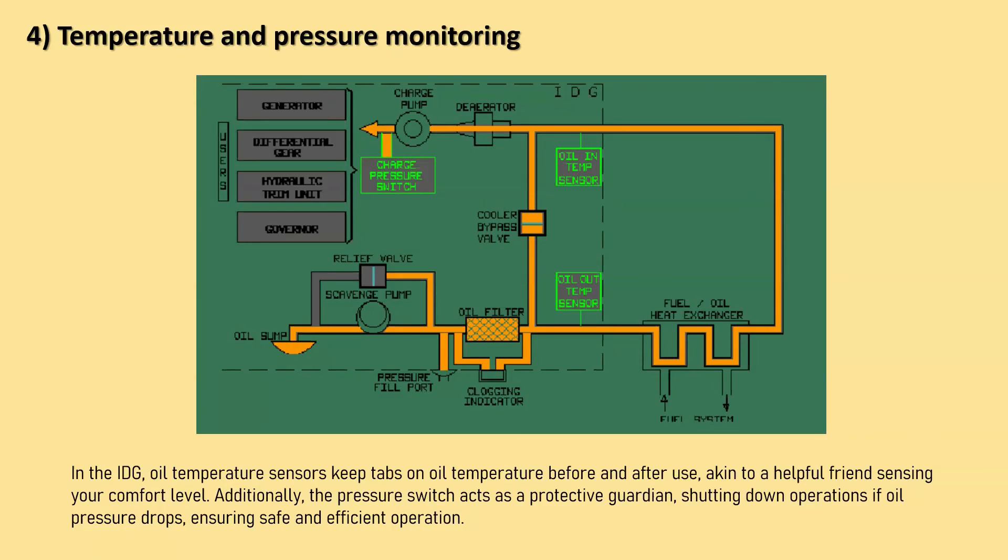Now let's talk about another friend, the pressure switch. Imagine you have a water hose with a valve. If the water pressure suddenly drops, the valve automatically shuts off to prevent a flood. Similarly, the pressure switch in the IDG senses if there's not enough pressure in the oil system, which could mean there's a problem. It then kicks into action like a superhero to protect the IDG from potential damage by shutting things down.